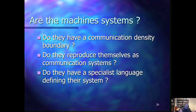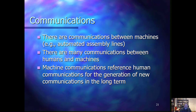Although machines may generate a range of behaviors, particularly more advanced robots, there is still quite strict limitation on how many and what kind of behaviors these machines can generate. The question is: are these machine systems? Do they have a communication density boundary, do they reproduce, and do they have a specialist language defining their system? If you look at communications, there are communications between machines — for example, in an automated assembly line in a factory where one machine interacts with the next, you have a lot of communications between these machines. But again, these communications are quite narrowly specified.